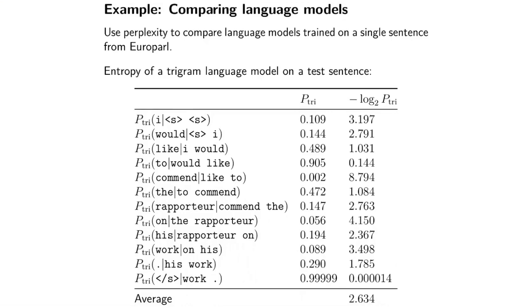Here's just one very concrete example, where we trained a trigram language model on the Europol corpus. This is a corpus from the European Parliament. And what we've done is we've collected all the counts for trigrams in this dataset, and from that we can build a trigram language model. And then what we can do is we can feed in a test sentence. The test sentence is, 'I would like to commend the rapporteur on his work,' full stop. And we can calculate the perplexity, or maybe the log perplexity, of this sentence.